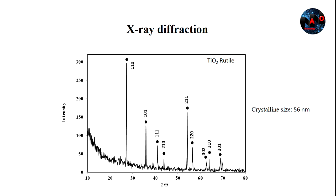The mean crystalline size of the synthesized titanium dioxide nanoparticles, obtained by the Scherrer equation, is 56 nanometers.